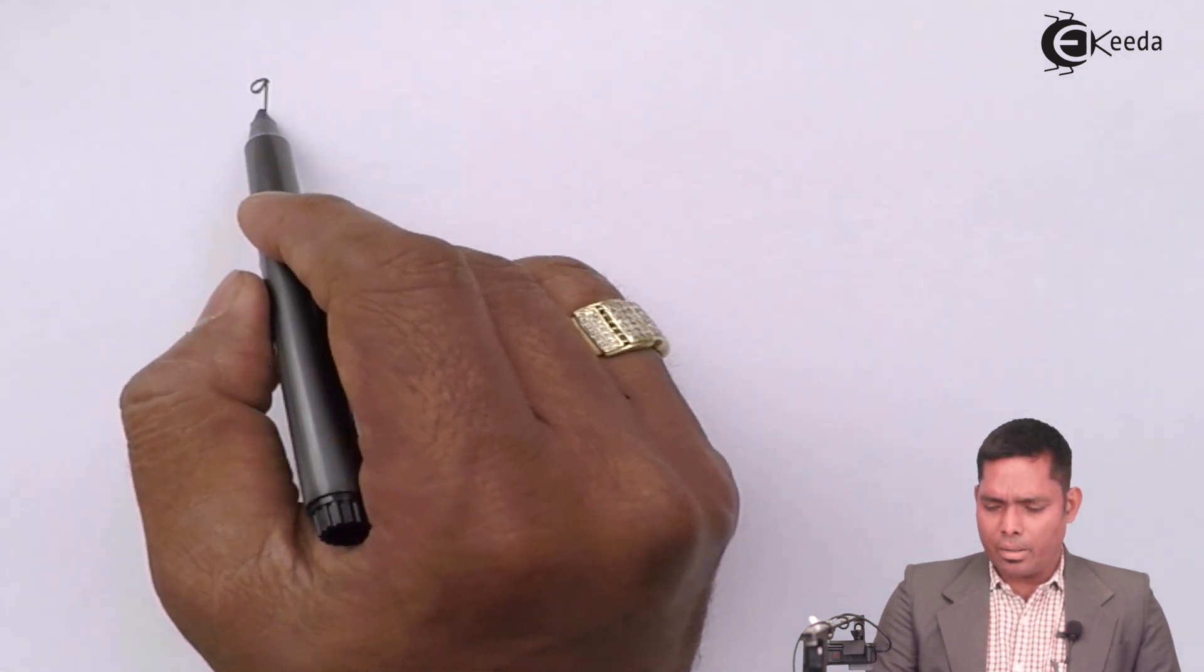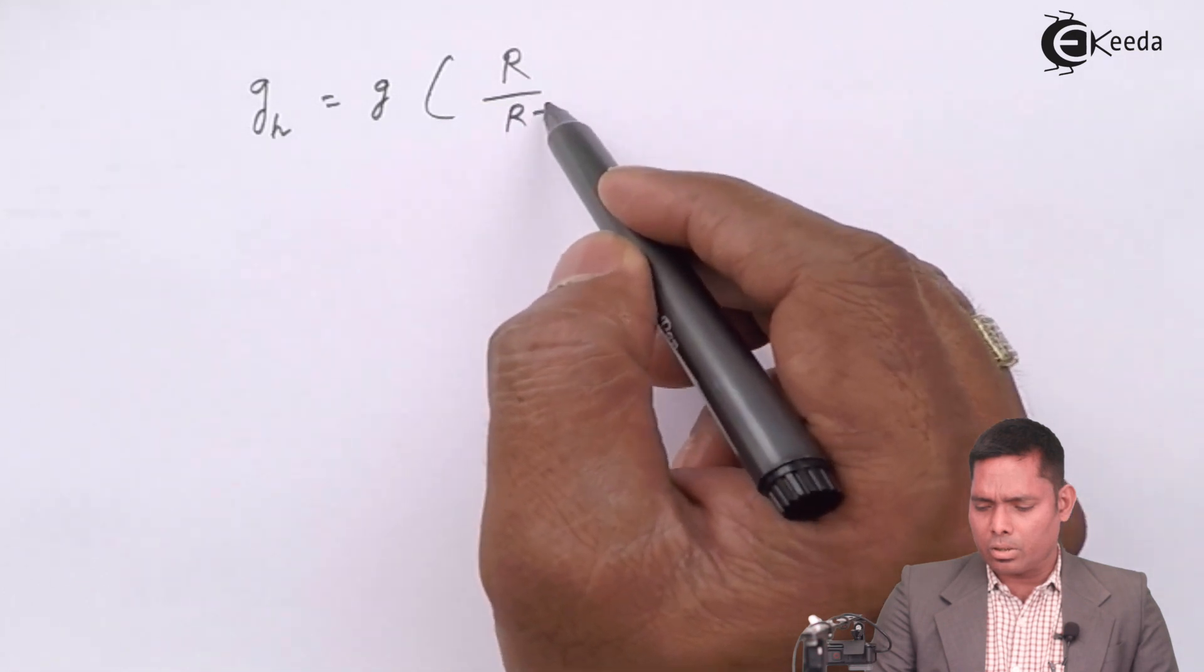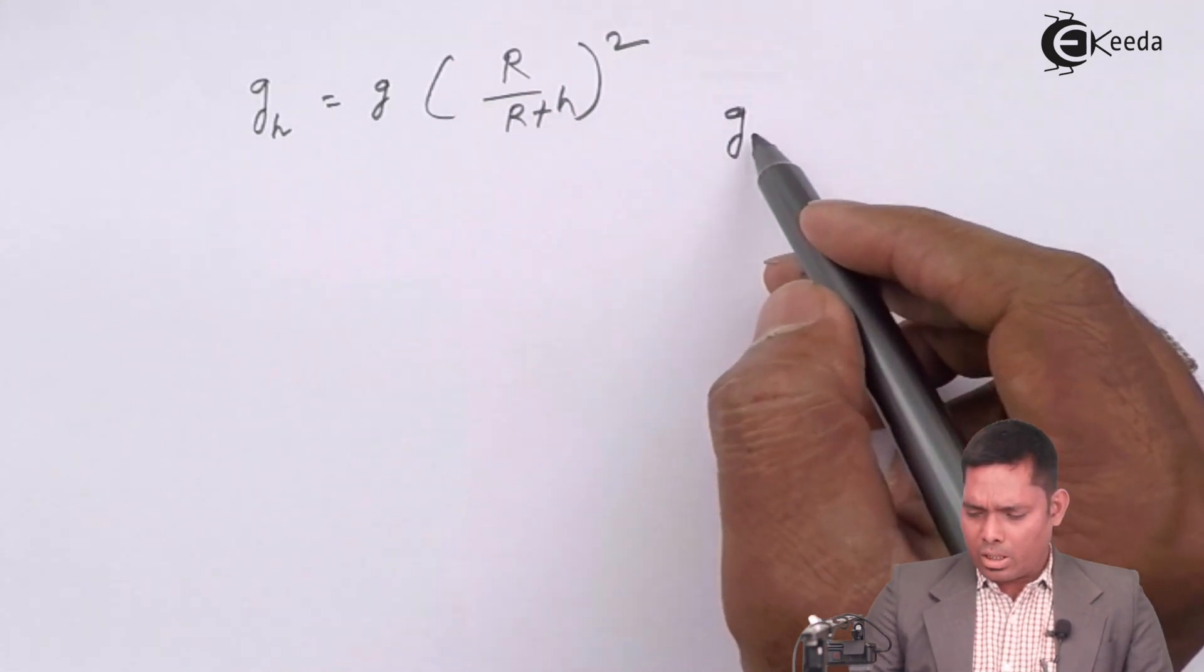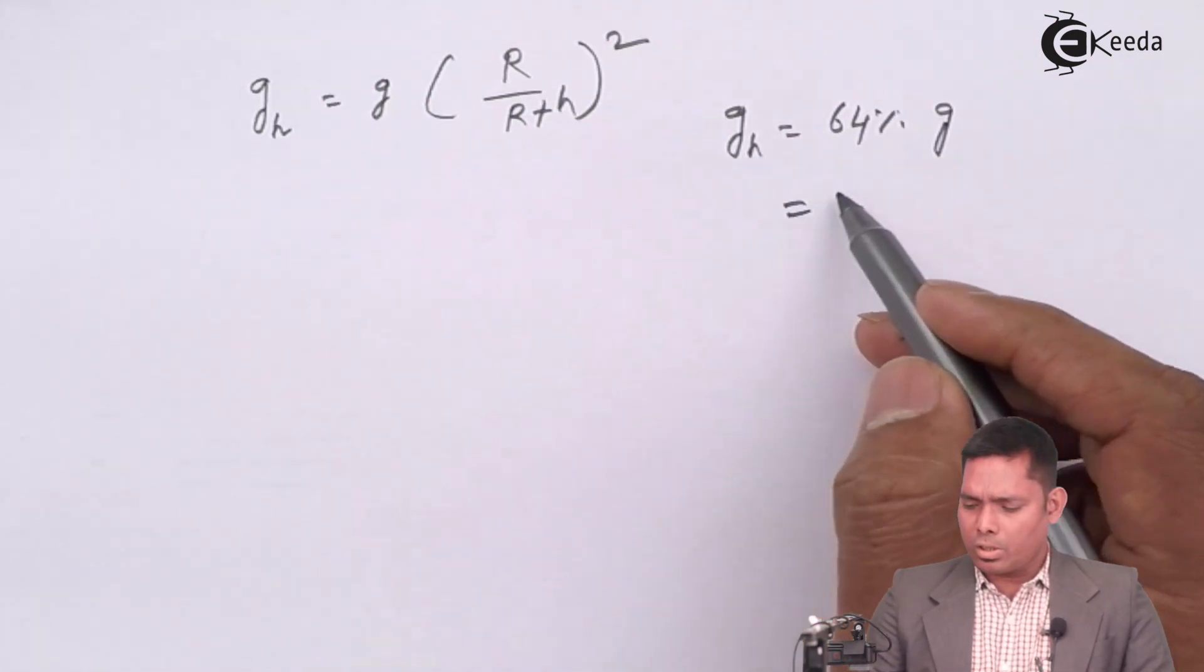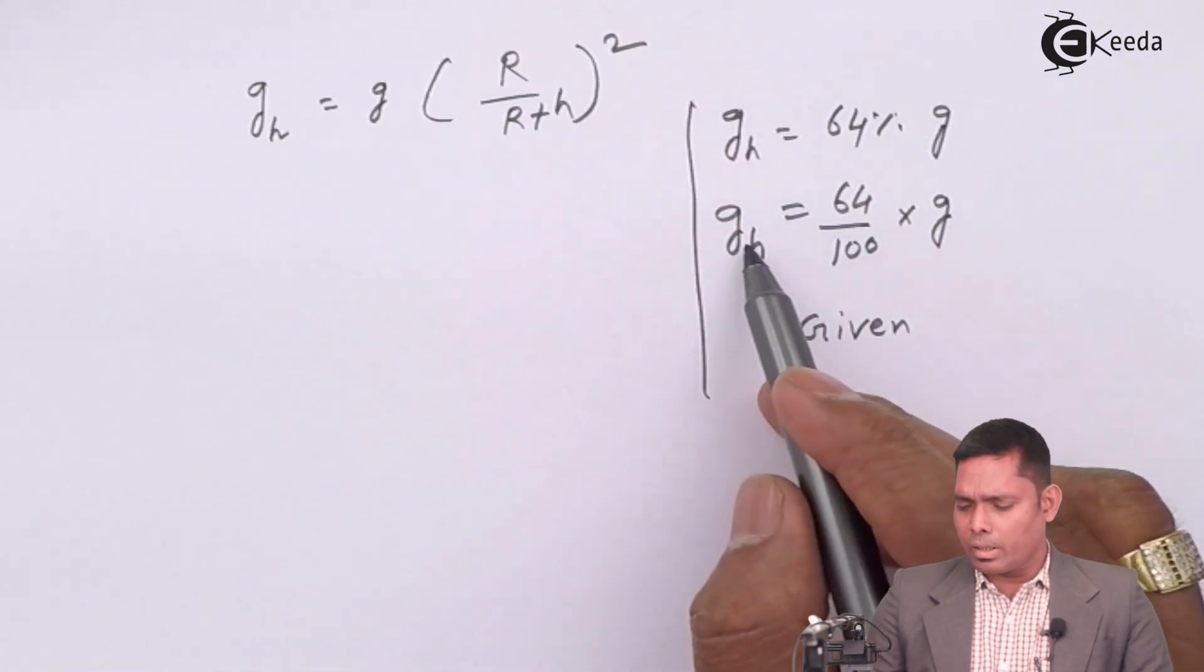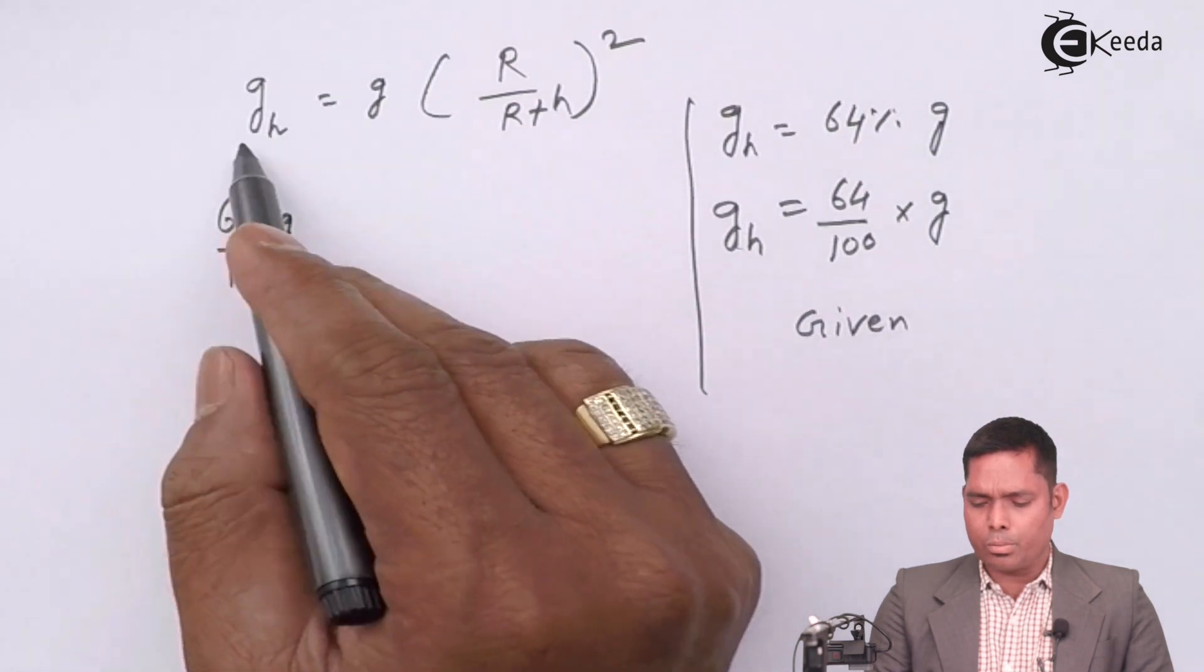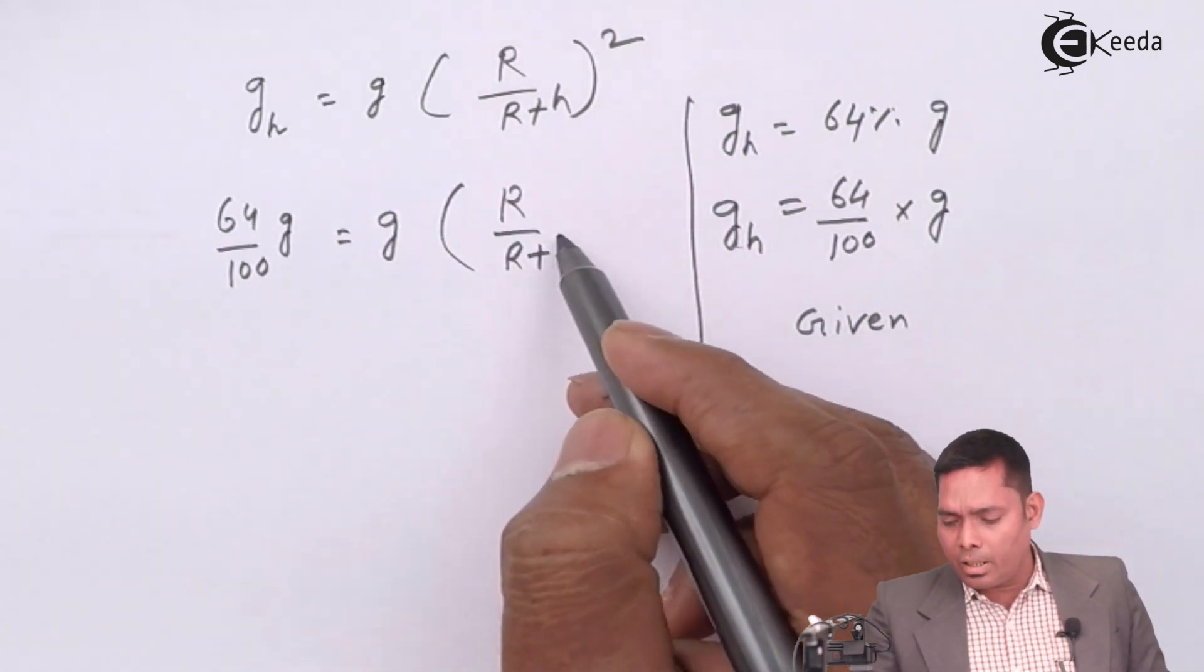So let us find the expression gh equals to g into R over R plus h the whole square. Now, according to the question, the height is 64% of g, which is 64 divided 100 into g. This is what is given. I will use this value over here. So I will get 64% of g equals to g times R over R plus h the whole square.